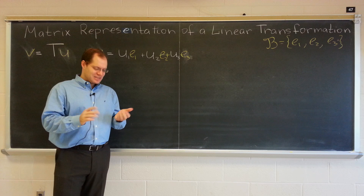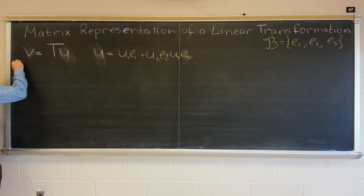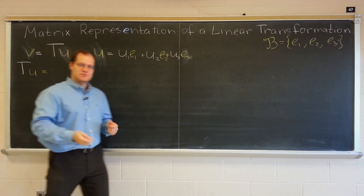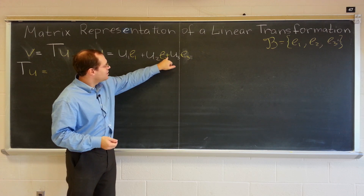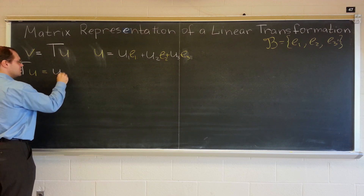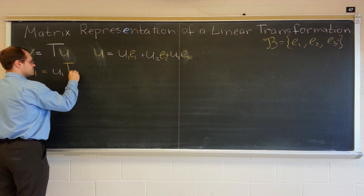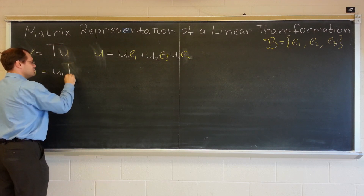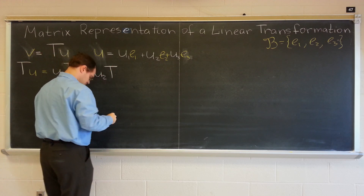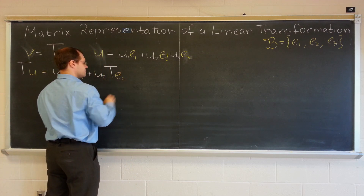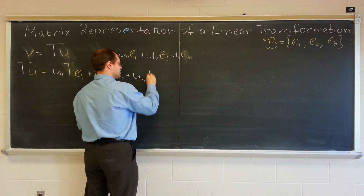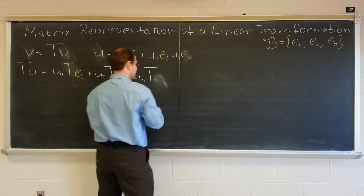Now let's apply the linear transformation T to both sides. On the left we'll have T(U). On the right-hand side, we're really taking advantage of the fact that the transformation is linear — it will split on the plus signs, and it will bypass the constants and apply to the vectors. So T(U) = U1·T(E1) + U2·T(E2) + U3·T(E3). This is the linearity of the transformation.